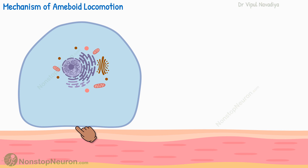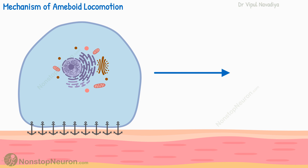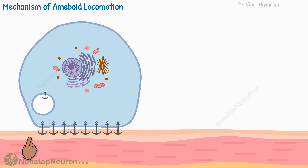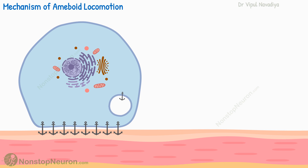First, the movement of the cell membrane. Usually, the cell is attached to its surrounding through the receptors on its membrane. Now let's say the cell needs to move in this direction. For this, the cell membrane at the rear end of the cell is pulled inside the cell by endocytosis. This results in shrinkage of the cell membrane on this side of the cell. The endocytotic vesicle created with this membrane is transported to the front end, where its membrane is inserted into the cell membrane by the process of exocytosis.